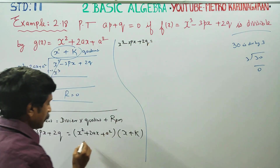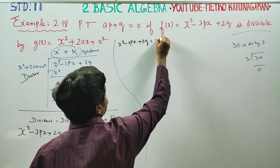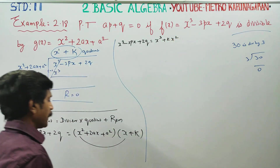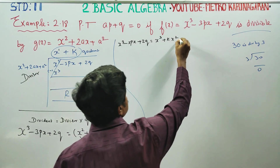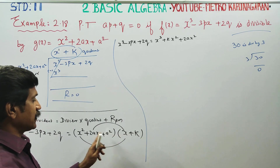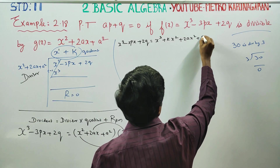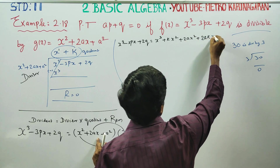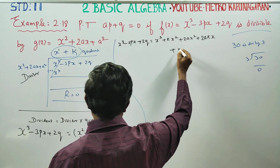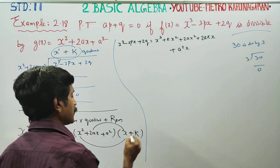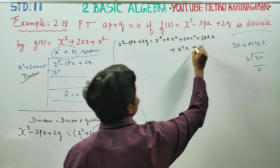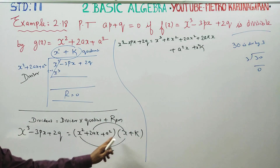Expanding the product, I get: X cubed plus KX squared plus 2AX squared plus 2AKX plus A squared X plus A squared K. Collecting terms: A squared X plus K plus A squared K.